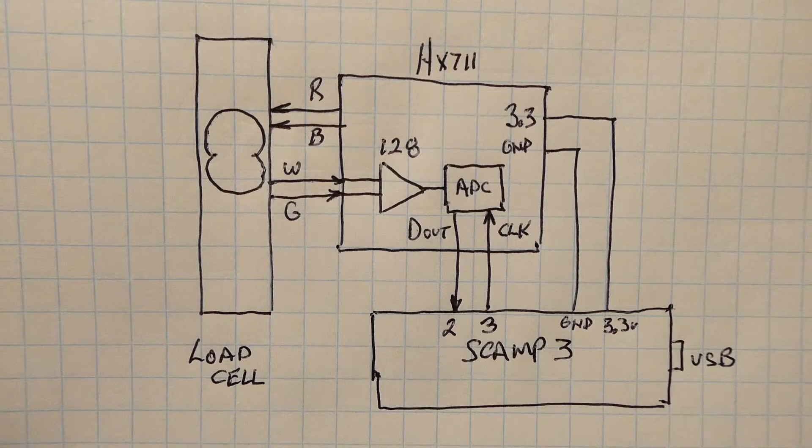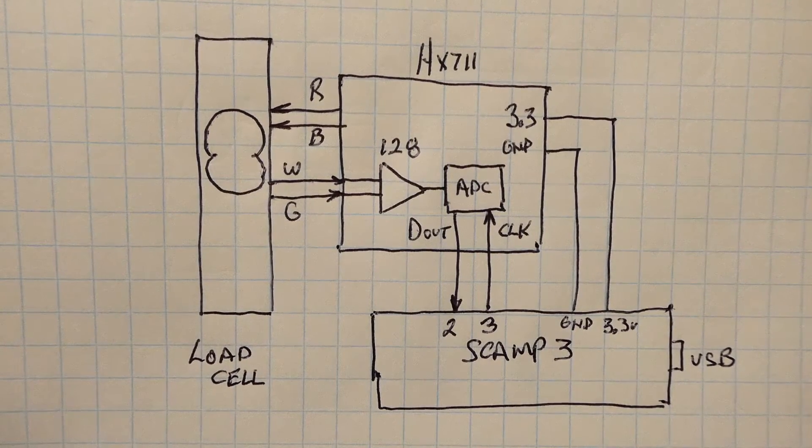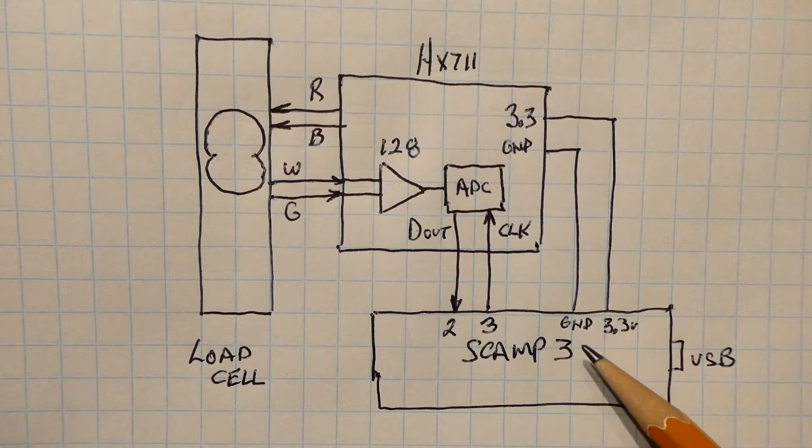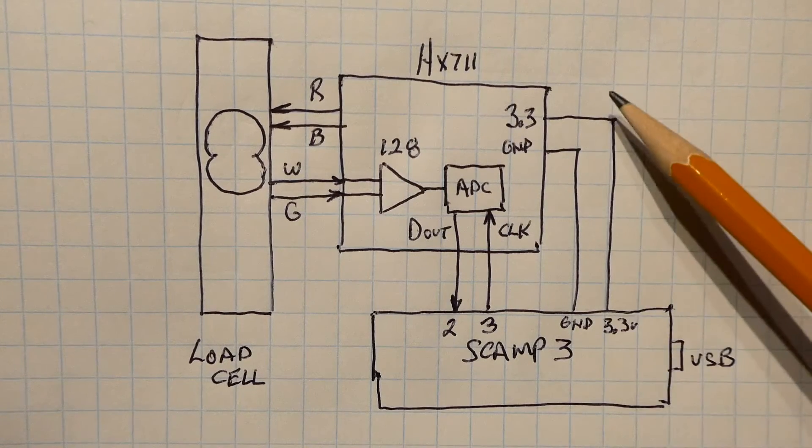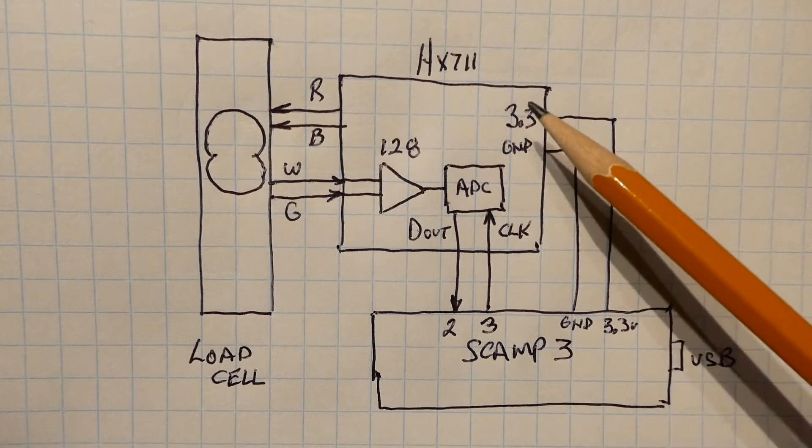Okay, here's the schematic diagram of the circuit that I built on my breadboard. We can see the SCAMP3 board is feeding power and ground, 3.3 volts, to power the HX711 breakout board.